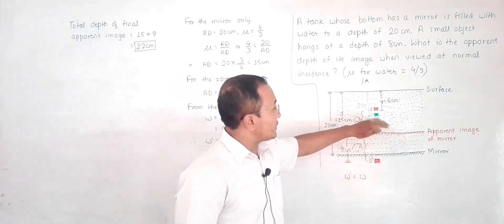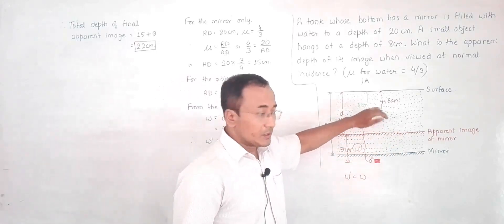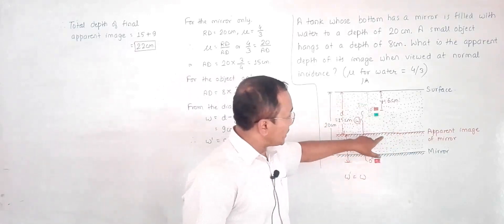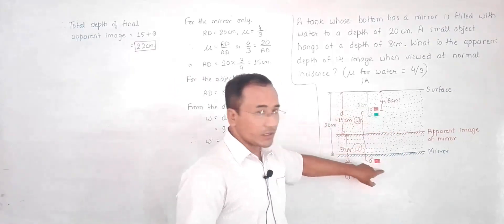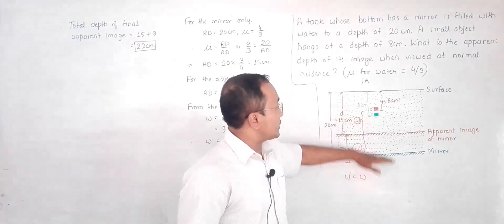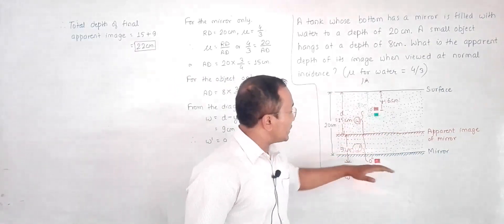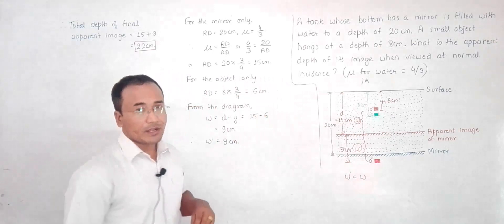This problem is a bit tricky. What has happened here is that the mirror has shifted to an apparent position due to refraction, and the object has also shifted. The mirror then forms the image of the object at the calculated position, and we found the total apparent depth to be 22 centimeters.